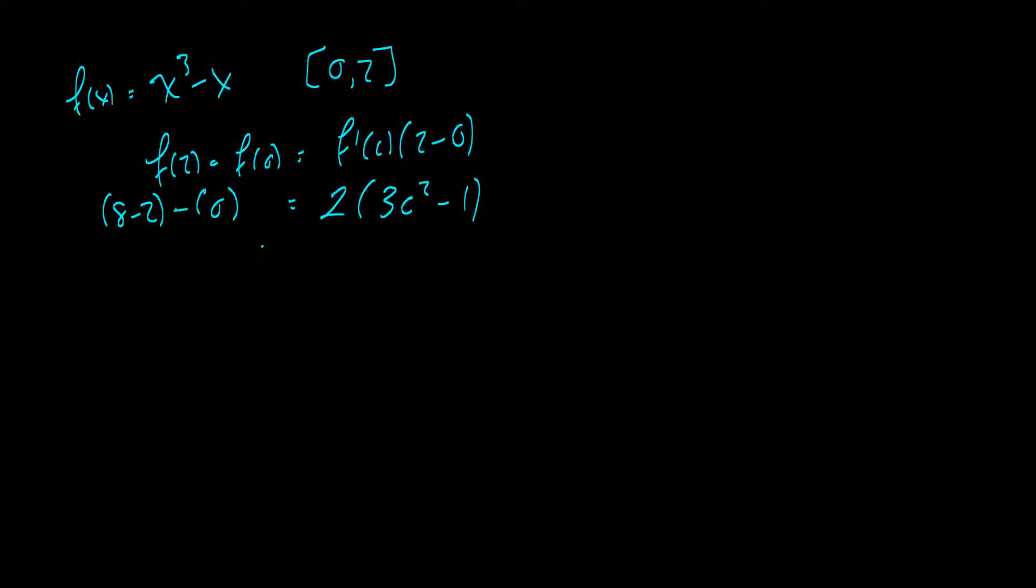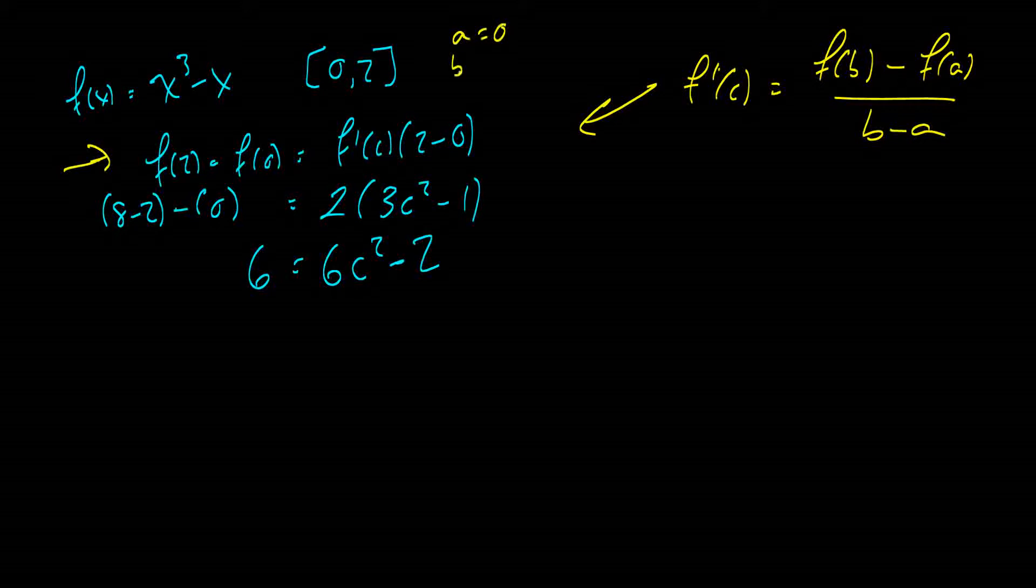So we can say that 6 is equal to 6 c squared minus 2. And I'm going to slow down here and clarify some things. The theorem states that f prime of c is equal to f of b minus f of a over b minus a. So we did algebra here to get to this step, plugging in a and b. So we have a is equal to 0, b is equal to 2. We then plugged in our values in the second step, taking the derivative with respect to x, plugging in the value c. And then we simplified.